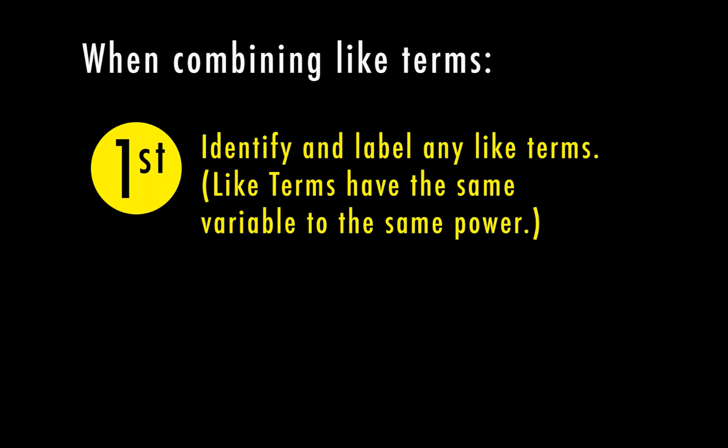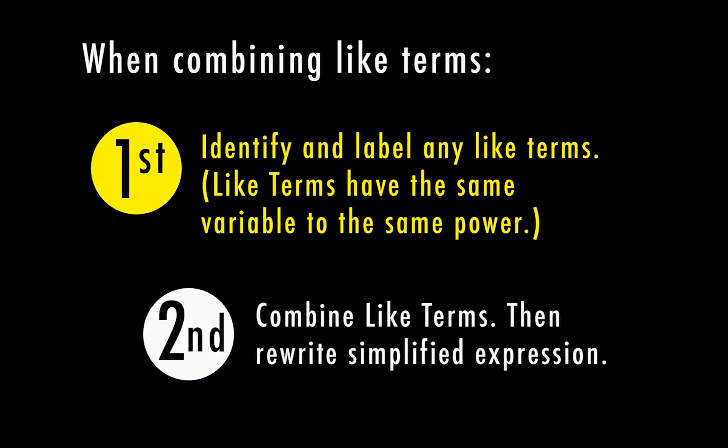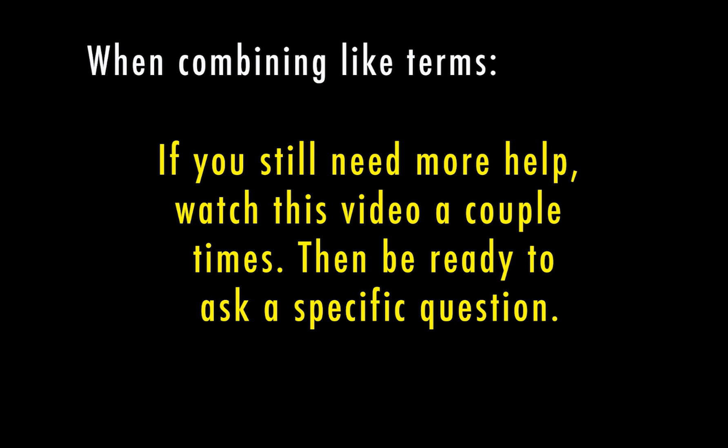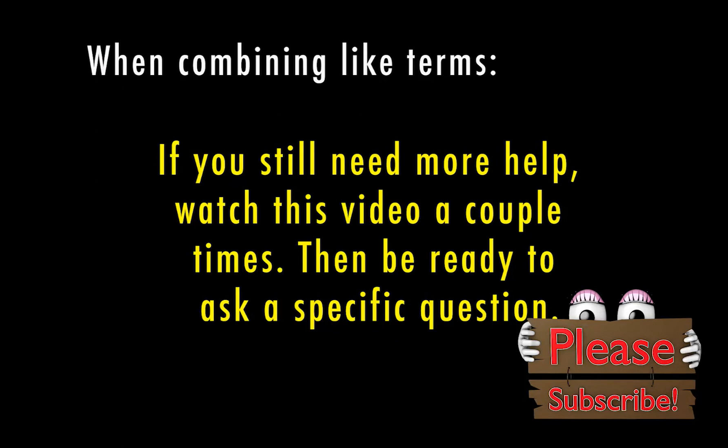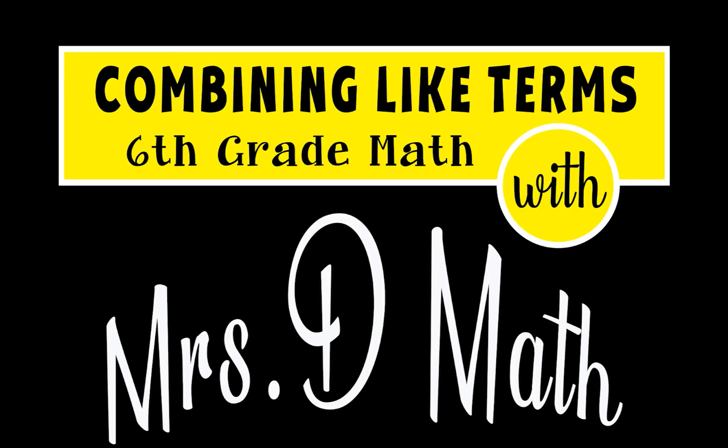Let's recap these steps for combining like terms. There are really only two steps. First, identify and label any like terms — remember, like terms have the same variable and the same power or exponent. Second, combine the like terms to rewrite your simplified expression. I hope this video helped you understand combining like terms. If you need to watch it a couple more times, feel free to. If you still have questions, be ready to ask something specific so I can help you. This is Mrs. D signing off on combining like terms — I hope you guys have a great day. Bye!